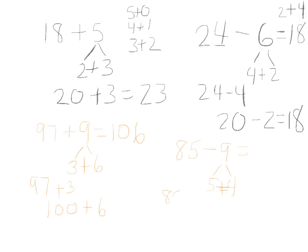So 85, I want to subtract 5, and I will get 80. Then I still have this 4 that I need to subtract from the 80. If I have 80 and I subtract 4 from it, I will get 76.